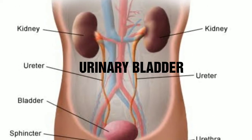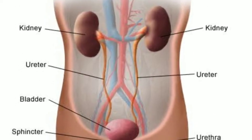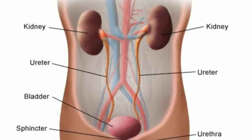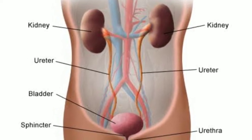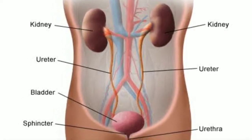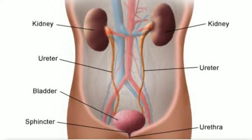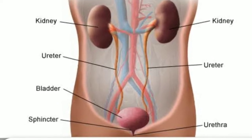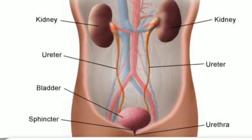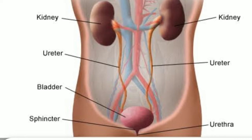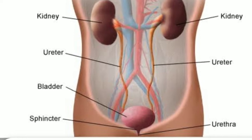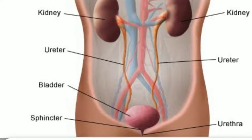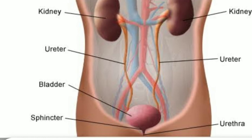The urinary bladder is a pear-shaped, highly distensible sac-like reservoir present in the pelvic region. It has two openings of ureters and one urethra. The opening of the bladder is guarded by sphincter muscles, which remain closed except when urine is to be passed out. The bladder can store up to 1 litre of urine.